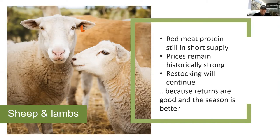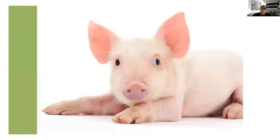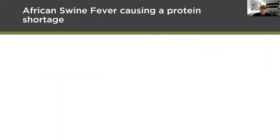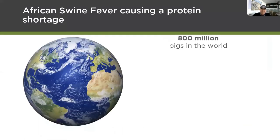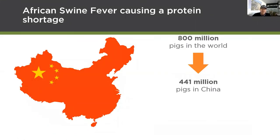Talking about that red meat protein shortage, you've got to talk about pigs. The African swine fever has gone off the radar a bit because of the bigger COVID-19 story, but the problem hasn't gone away. To give a snapshot: there were 800 million pigs in the world, and 440 million of those were in China.